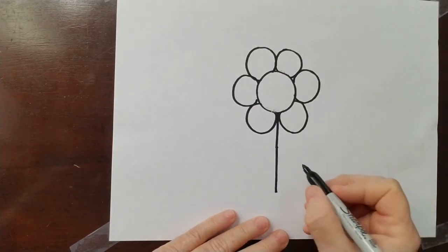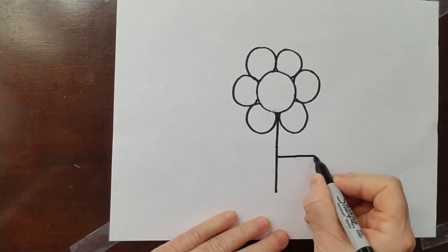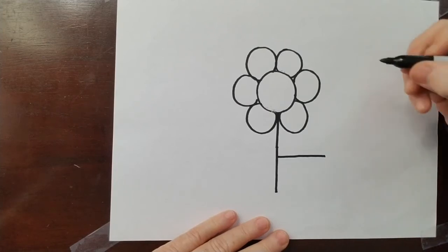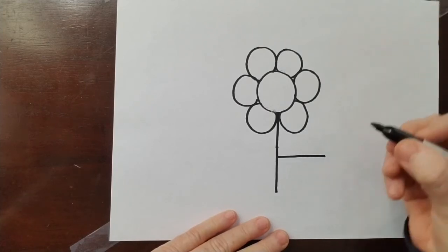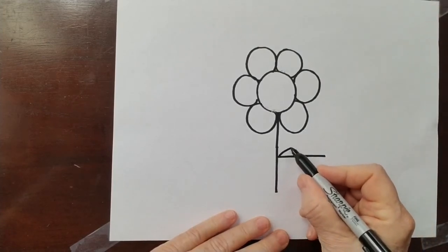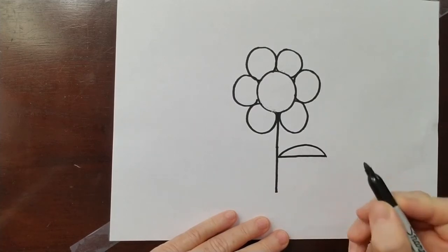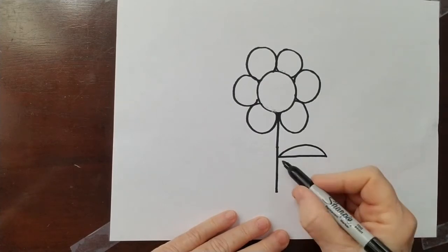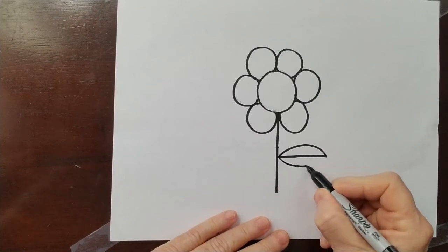Next step is a horizontal line. This is going to be a leaf. It curves up and then down, and down and then up.